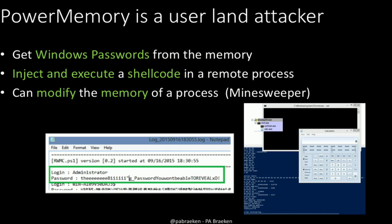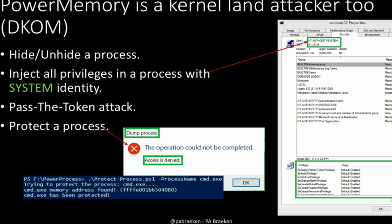PowerMemory is also a userland attacker. You can get Windows passwords from memory, inject and execute shellcode in a remote process, and modify the memory of a process — I'll show you a demo with Minesweeper. PowerMemory is also a kernelland attacker. With DKOM (Direct Kernel Object Manipulation) you can do pretty much everything you can imagine: hide processes, inject privileges into a process with SYSTEM identity — because I found empirically across many different Windows versions that the SYSTEM hash is always the same across systems.